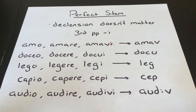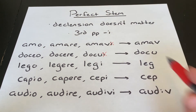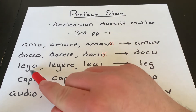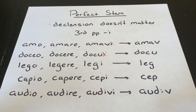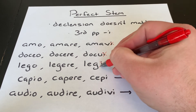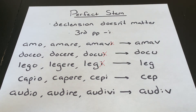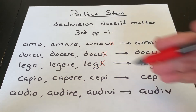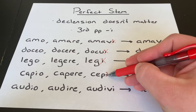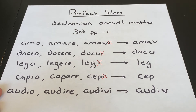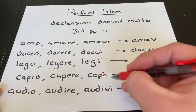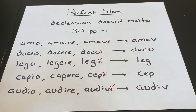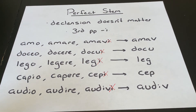For doceo, docere, docui — take the I off the third principal part and you get docu. For lego, legere, legi — it doesn't matter that it's third conjugation; take off the I and there's your perfect stem, leg. Same thing for capio, capere, cepi — take off the I and that's your perfect stem. And for audio, audire, audivi — the third principal part minus the I gives you the perfect stem audiv.